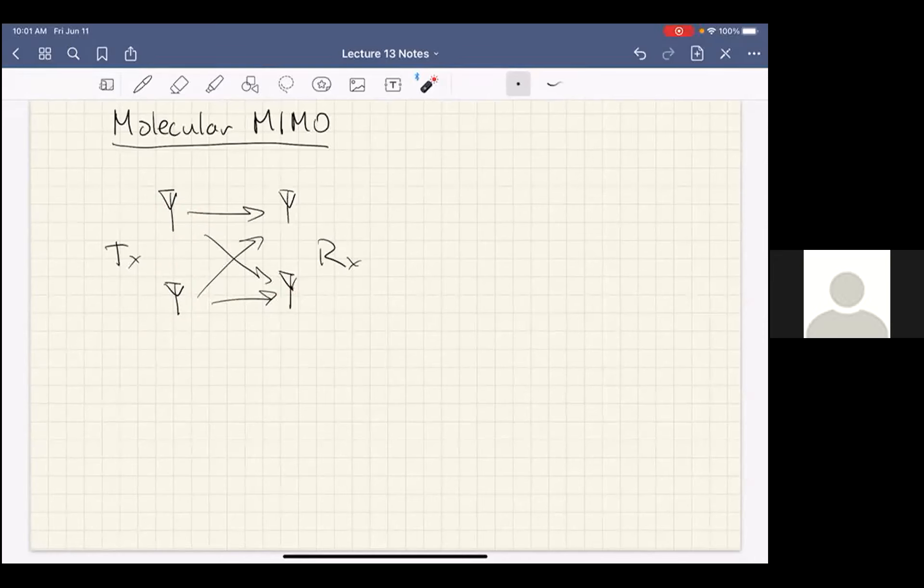We can do something similar in MIMO, and how it would work here is you would have a molecular emitter, more than one molecular emitter, at the transmitter. These might be reservoirs, and we would emit molecules into a shared fluid medium.